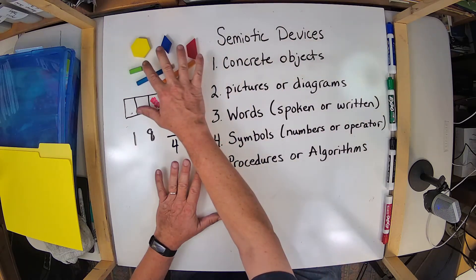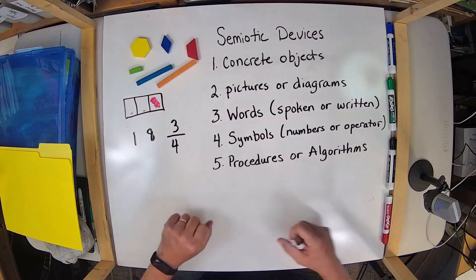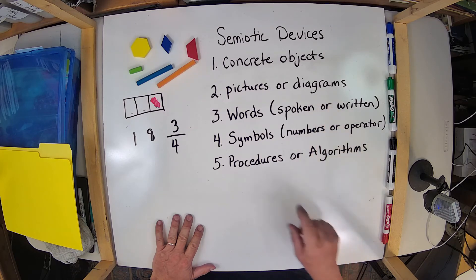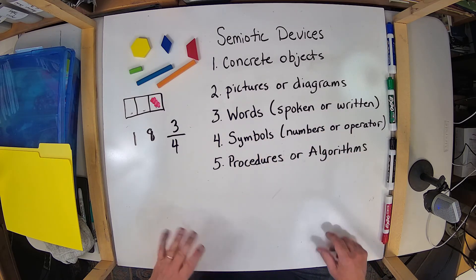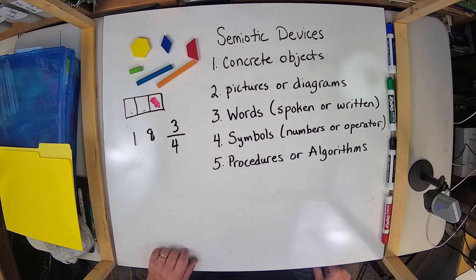Concrete objects, which we want in their hands, pictures and or diagrams, words that are both spoken and written, symbols that are numbers and or operators or a combination of those, and procedures and algorithms.